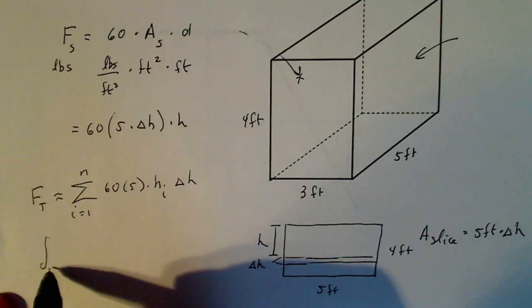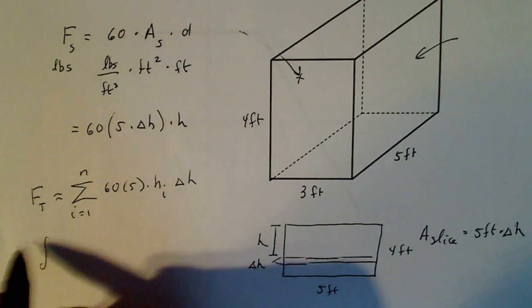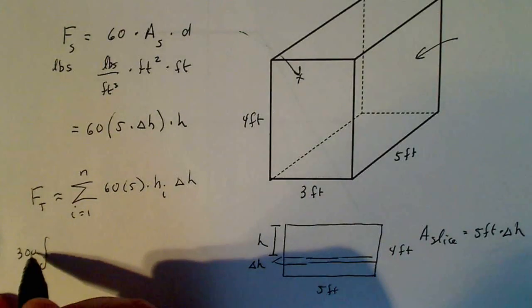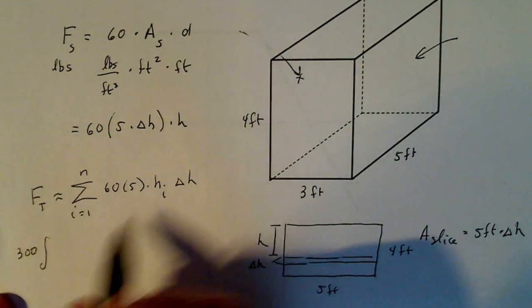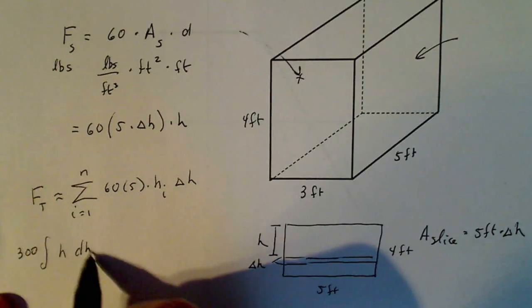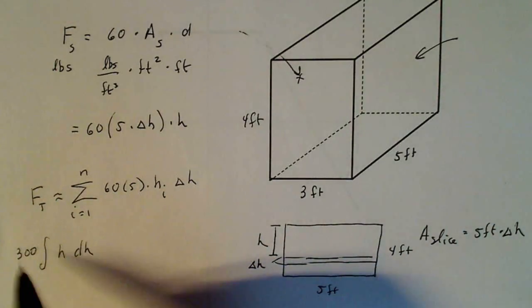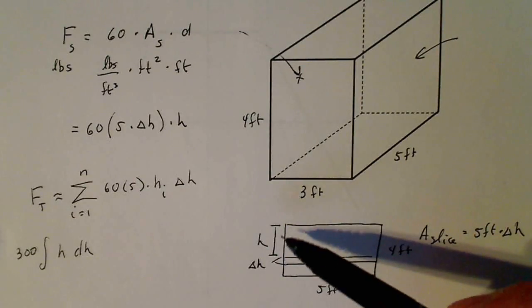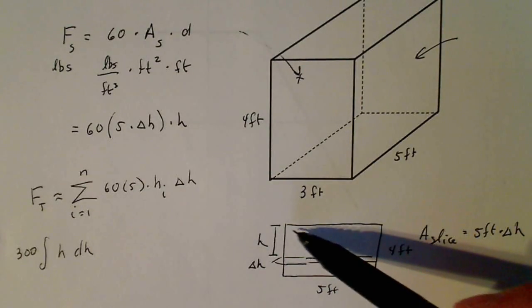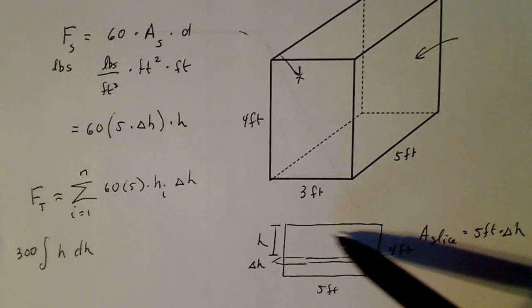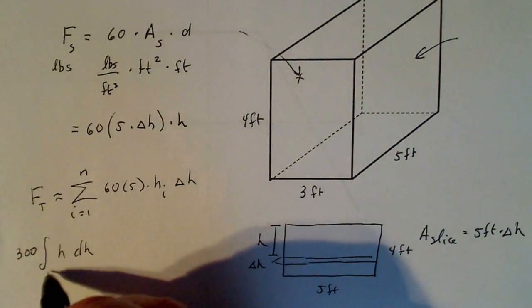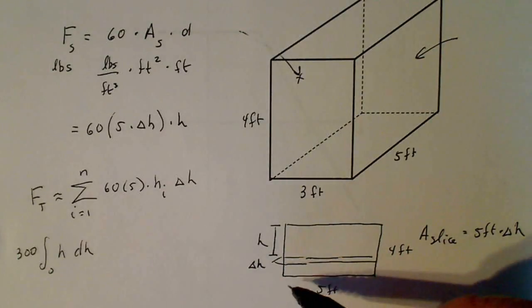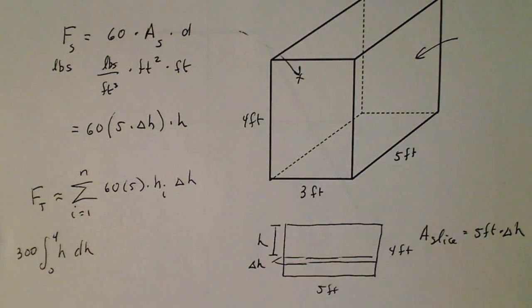So the last thing I want to do is add the infinite sum. 60 times 5 is 300. And then I have H dH. So I have to think about my limits. These limits are the extremes of this value of H. So in other words, if I slice right at the top and measure the force, H is going to be zero. And if I measure all the way down to the bottom and measure force, H is going to be four. So there are my limits.